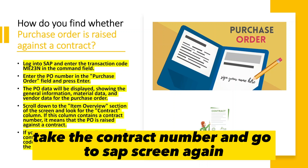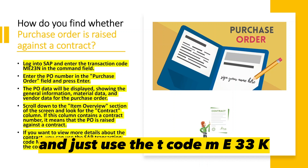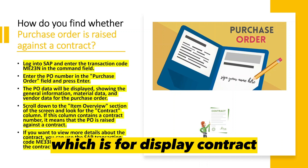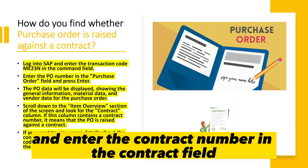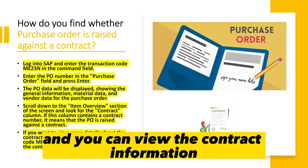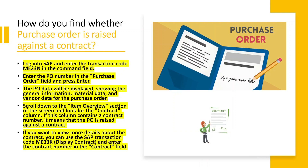If you want more information on the contract itself, take the contract number and go back to the SAP screen. Use T-code ME33K, which is for displaying a contract. Enter the contract number in the contract field and you can view the contract information.